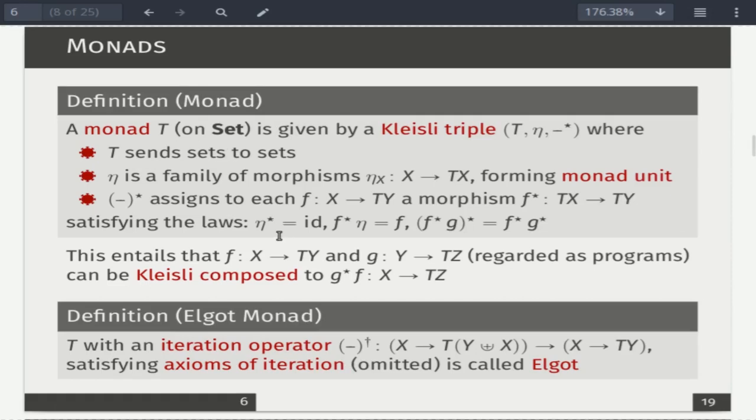And then additionally to the standard definition of a monad, like I said, we need iteration, meaning that we need not only a monad but an Elgot monad. So a monad plus an iteration operator like this, subject to suitable axioms which are just omitted here.